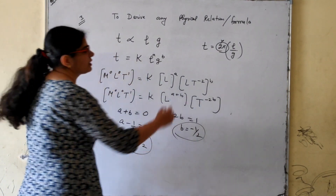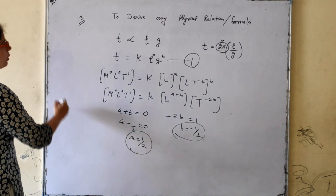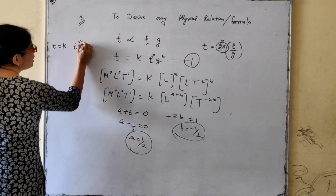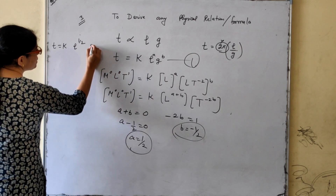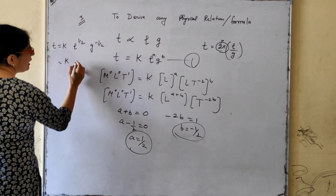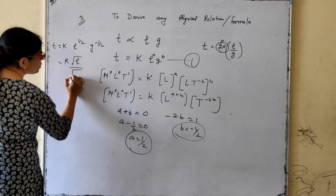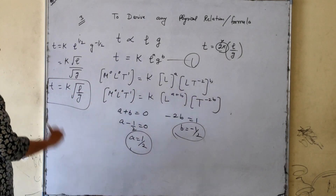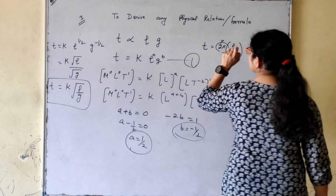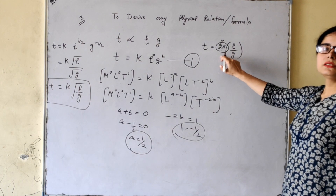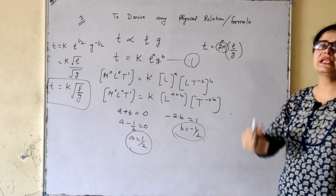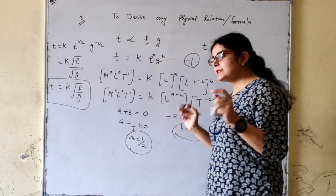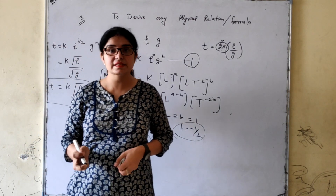Substituting a = 1/2 and b = −1/2 back into the equation: T = k · l^(1/2) · g^(−1/2) = k√(l/g). Since the original question gives the constant as 2π, we can write k = 2π. However, dimensionally we cannot calculate the value of this constant k. This is the third application of dimensional analysis — deriving physical formulas.